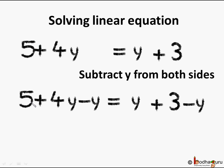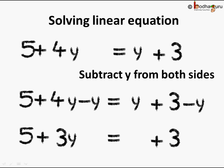So on the LHS, 5 plus 4y minus y, and on the RHS also we need to subtract y, so it becomes y plus 3 minus y. Solving it further, we get 5, we just write it down as 5. 4y minus y becomes 3y on the LHS, and this is equal to—what do we get on the RHS? Y minus y becomes 0, so we are left with only 3. So this equation gets reduced to 5 plus 3y is equal to 3.